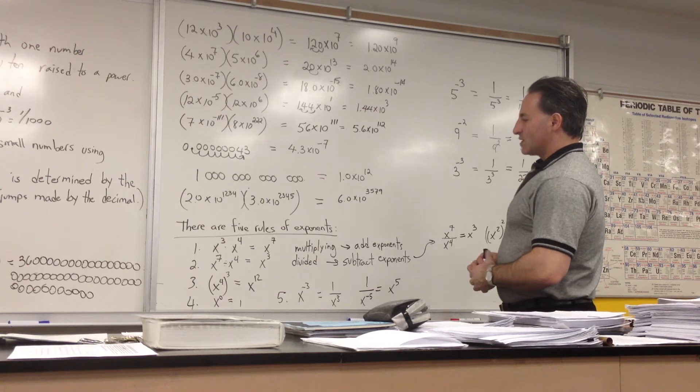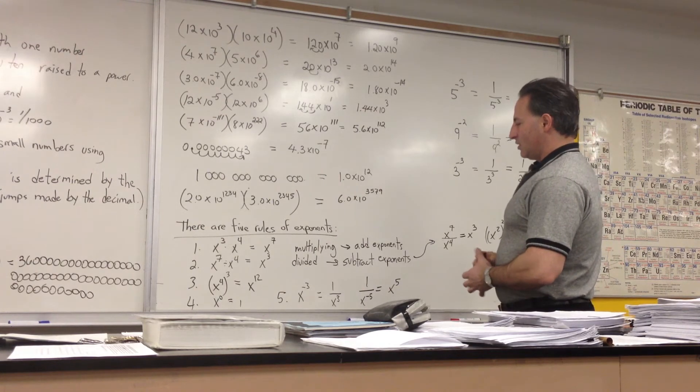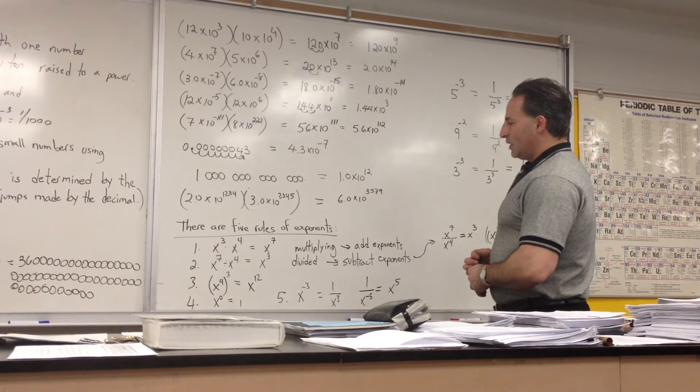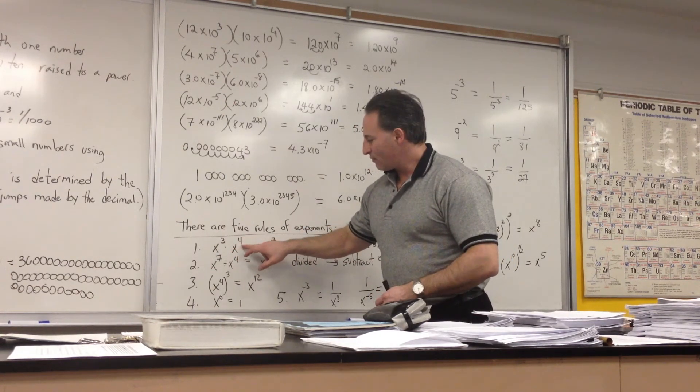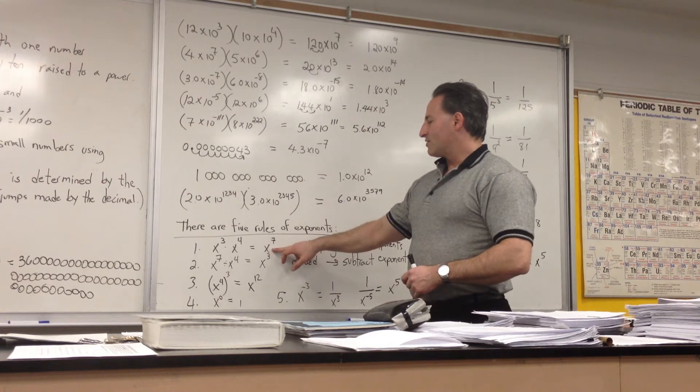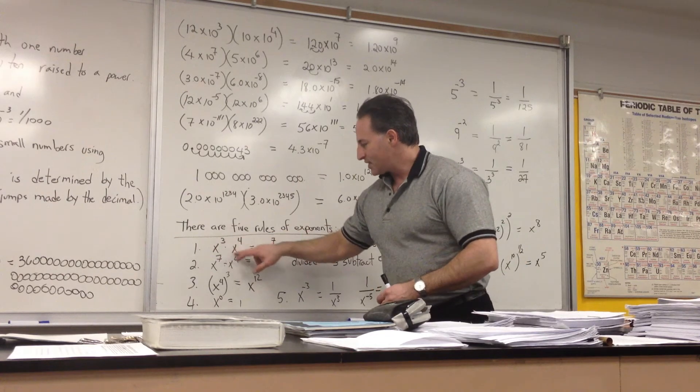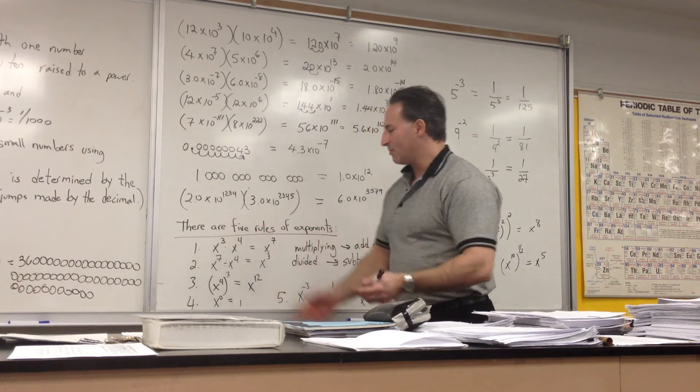So there are five rules of exponents that you should know by this time. Whenever you have a number raised to the power of 3 times a number raised to the power of 4, the answer will be raised to the power of 7. Now to do this, you have to have the same base. Both of the bases have to be x or y or some number. You can't have different bases and then add the exponents.